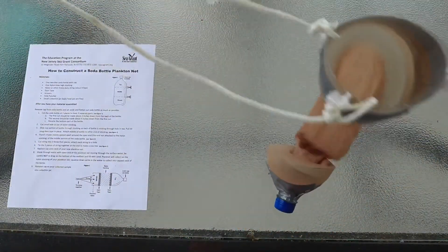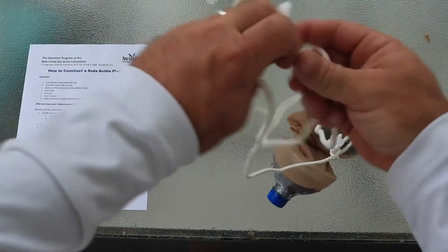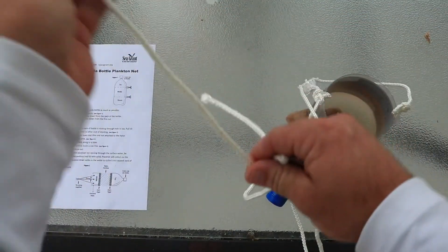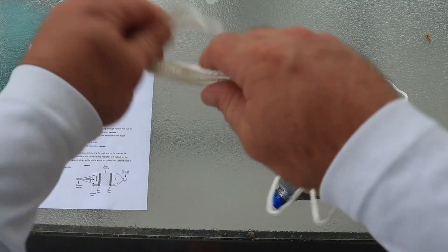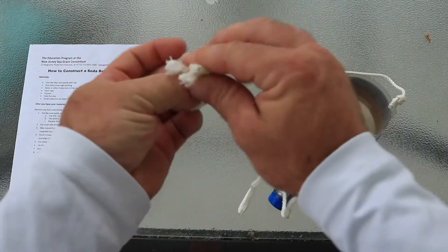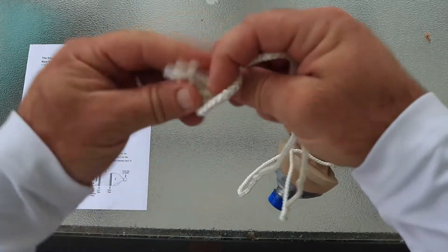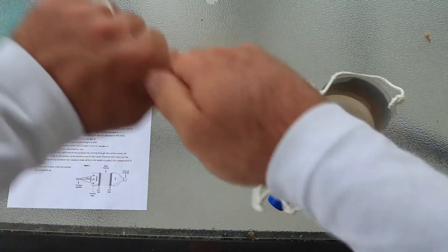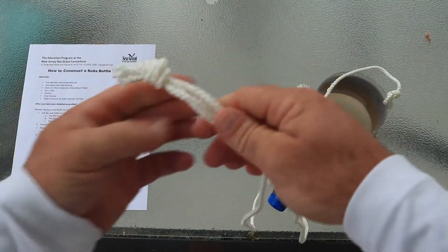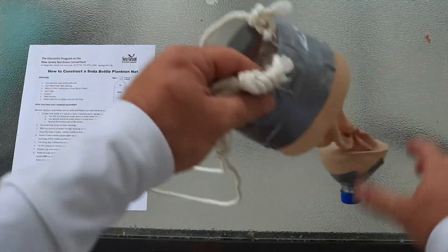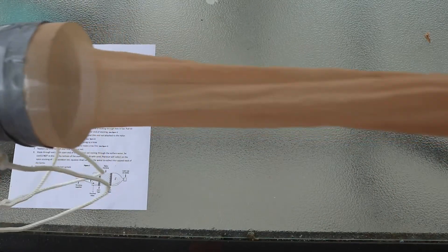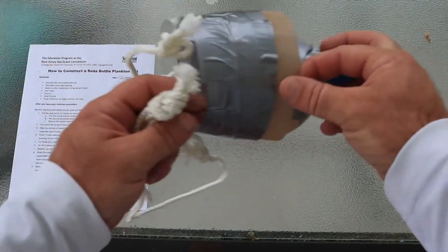Okay, now we're going to take the three ends and tie them together to make a tow line. And there we have it, our plankton net from a soda bottle.